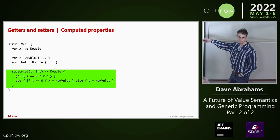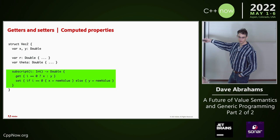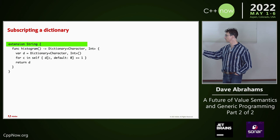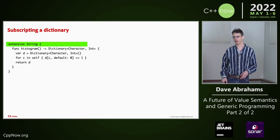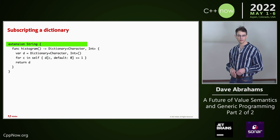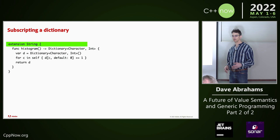The subscript is just a property with a parameter. Dictionaries have subscripts — you can subscript on keys. I've extended the standard library string type. All types in Swift that have a name can be extended like this, and that includes int. No types really have special status in the language, which is really good for generic programming.